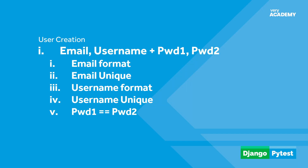Take this example. You have a Django application or any application that requires a user login. We ask users to sign up, so we create a form that includes email, username, password one, and password two. Behind the scenes we want the user to submit data and then validate that data — making sure the email format is correct, the email is unique against the database, and we do the same thing with the username. In addition, we want to check that the passwords are both equal.